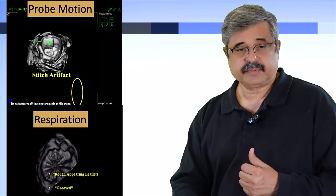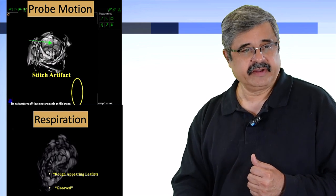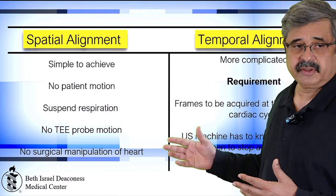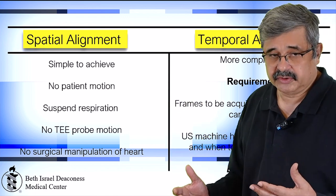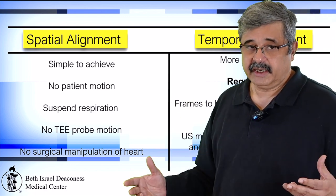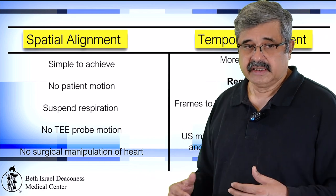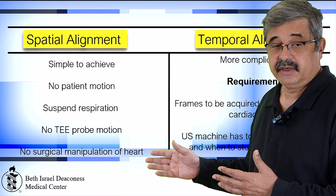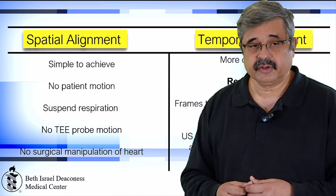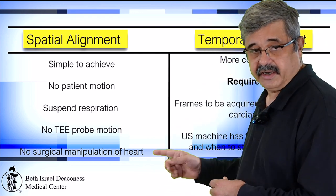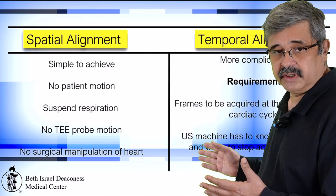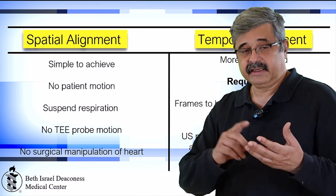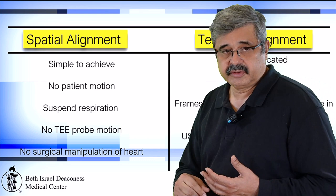This was the biggest problem with R-wave gated acquisition. The pros and cons: spatial alignment was simple to achieve — just hold the probe still, don't let anyone touch or move the patient, suspend ventilation, and avoid TEE probe motion. Temporal alignment, on the other hand, was pretty complicated. It depended not only on being in sinus rhythm, but also on the ultrasound machine having to both acquire the EKG signal and recognize the R waves.